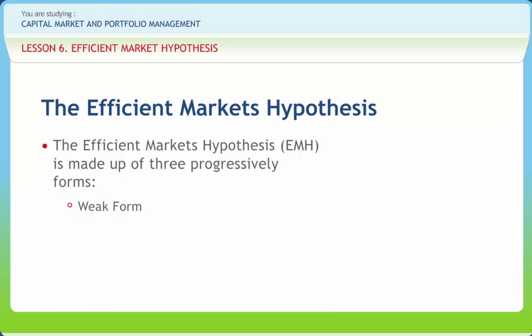Second is semi-strong form efficiency, in which share prices adjust within an arbitrarily small but finite amount of time and in an unbiased fashion to publicly available new information, so that no excess returns can be earned by trading on that information.